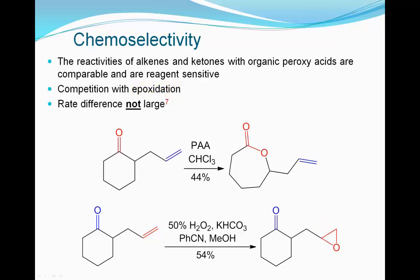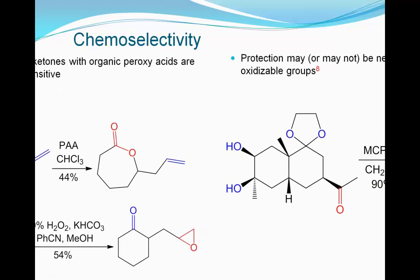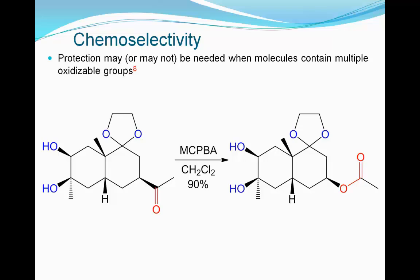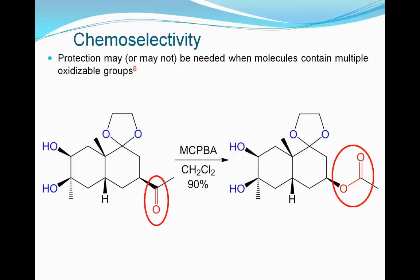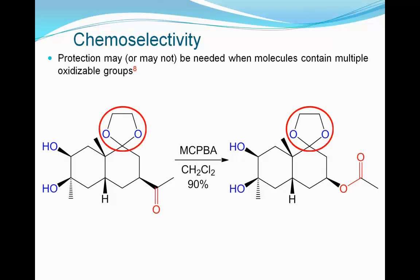The rate difference between the two reactions is not large. This example illustrates chemoselectivity of Baeyer-Villiger oxidation. While both the secondary alcohol and the carbonyl may be oxidized, here only the carbonyl gets oxidized. Furthermore, molecules that contain multiple carbonyl groups may be oxidized with group selectivity. However, in some cases, protection may be needed.